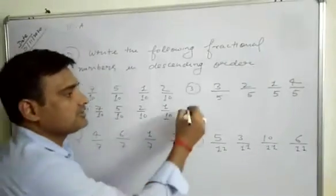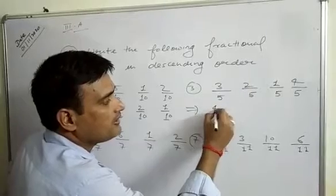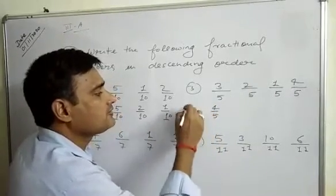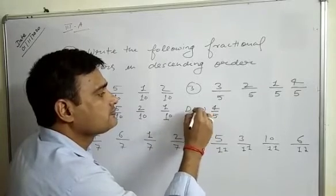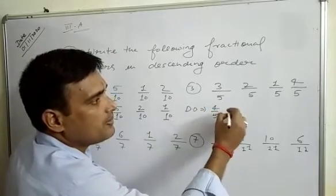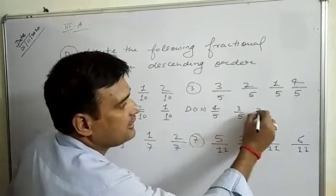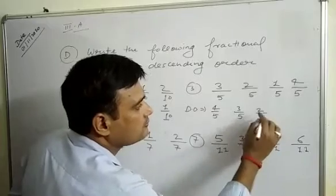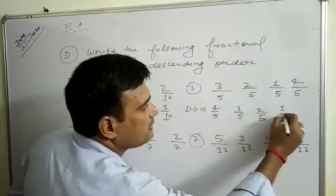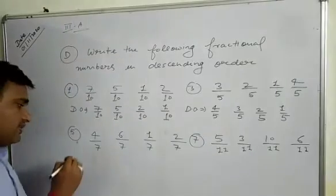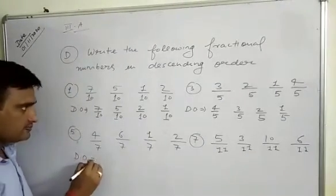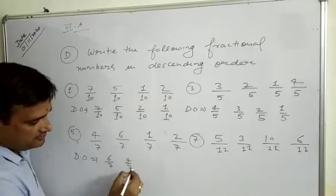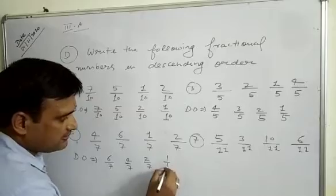In question 3, descending order: first we write 4 by 5, then 3 by 5, then 2 by 5, then 1 by 5. In question 5, descending order: 6 by 7, then 4 by 7, then 2 by 7, then 1 by 7.